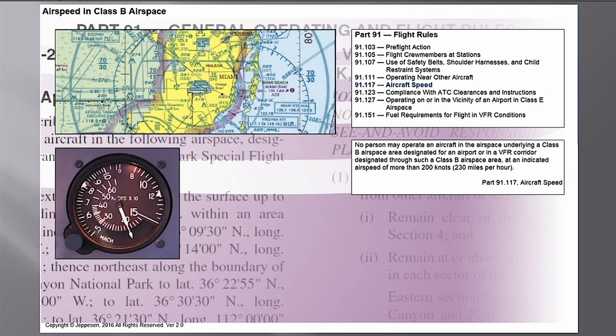Jeppesen shows Miami as an example. Look at all the airports surrounding it — pilots flying all around that area. If a VFR pilot came through in a Learjet or Citation cruising at 300 to 350 knots, you probably couldn't see and avoid that airplane. The closure rate by the time you see it and recognize what it is — it's too late. So everyone has to slow down there.